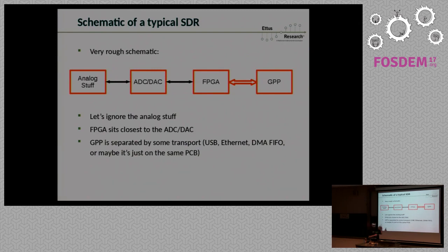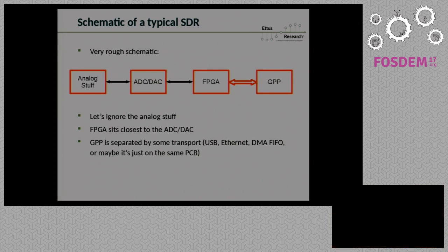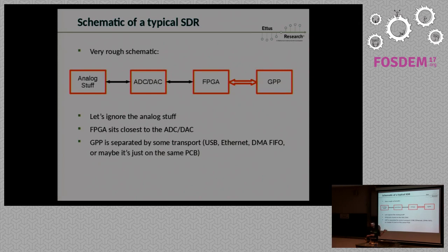We've already talked about ADCs and DACs a little bit, and what comes out of those is digital data. On most commercially available software radios — and by the way, I work for a company that builds software radios — they look like that, but it's not limited to that. This is the generic design you always have. Data coming from the DAC goes into an FPGA, and between the FPGA and your actual software running — GNU Radio for example — you will have some kind of transport getting data from the FPGA into your software.